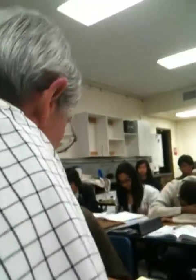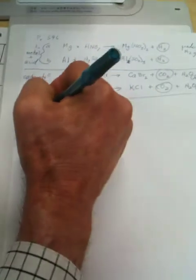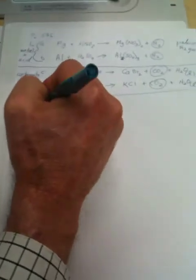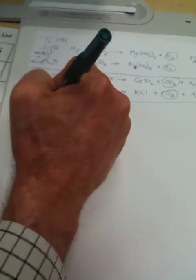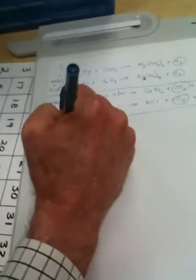We need to get into tonight's homework. Tonight's homework is page 601, and we are doing the ionization of acids. This is going to be number three.